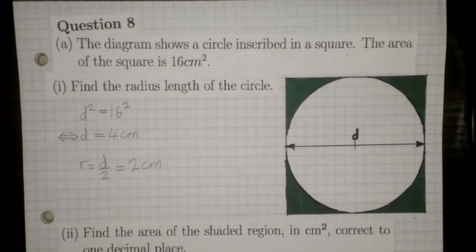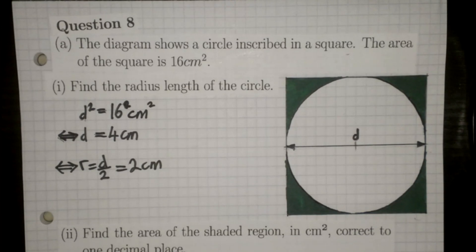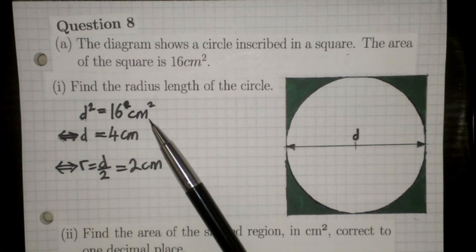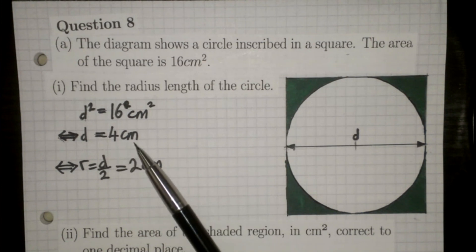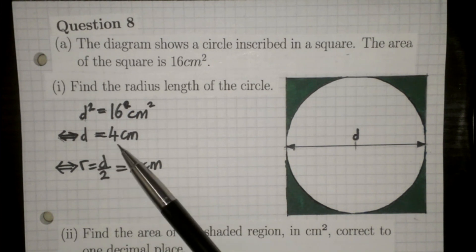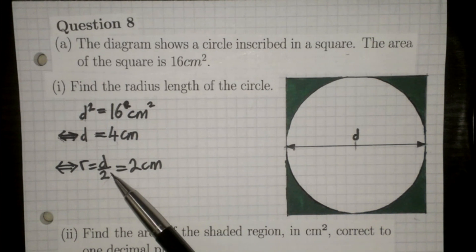To find the radius you know it's half the diameter. We need to get numbers involved because we want a number at the end. The only number given is the area of the square. If the side length is d, then the area is d², so d² = 16cm², meaning d = 4cm. In a purely mathematical sense it could be −4cm, but since we're talking about lengths they're always positive. So 4cm is the only option, and the radius is half of that, d/2, which is 2cm.